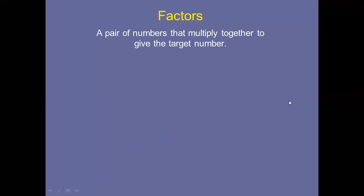Again, the definition: factors are a pair of numbers that multiply together to give the target number. Pair means two, and factor means part. Now, what are the factors of 20? Quickly think in your mind — which two numbers can you multiply together to get 20?